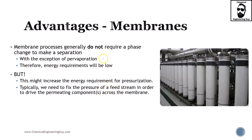Membrane processes generally do not require a phase change, with the exception of pervaporation. This is great because typically a change in phase will require a change in pressure or a drastic change in temperature, which typically requires either work or heat — overall energy requirements which are expensive. The main advantage of the membrane is that you do not require such phase changes.